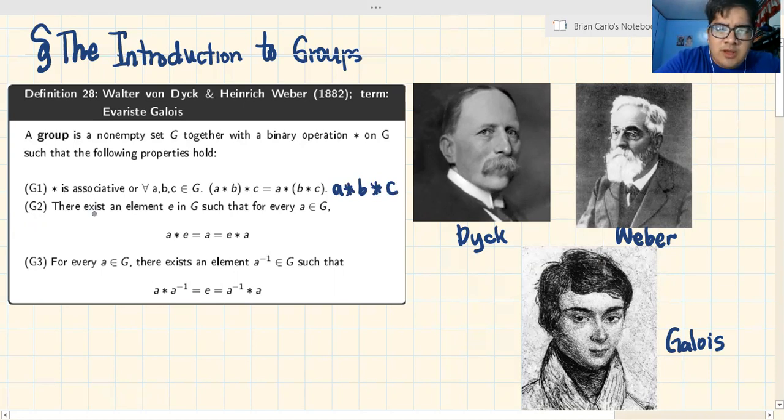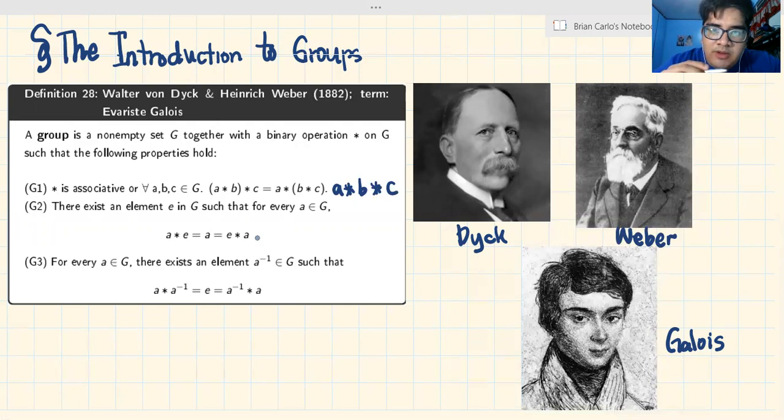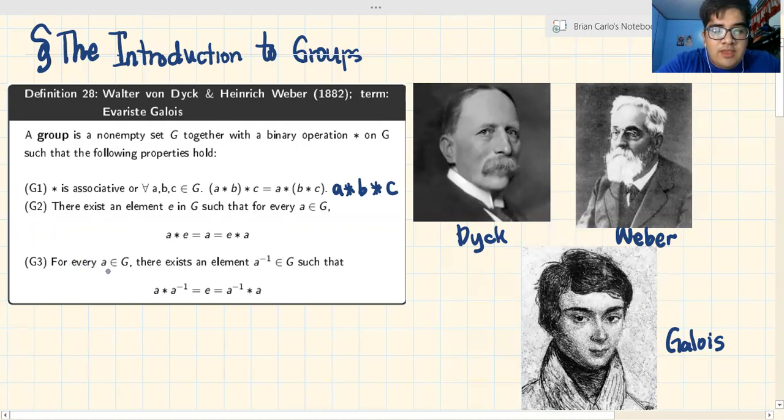Then A star (B star C) equals (A star B) star C. The grouping symbols are there. Or since it's associative, we can write it as this without ambiguity. Now, the second property we call G2. There exists an element E in the non-empty set G such that for every A that is an element of G, A star E equals A equals E star A. That element E, when you apply the binary operation with any element in G, the result is itself.